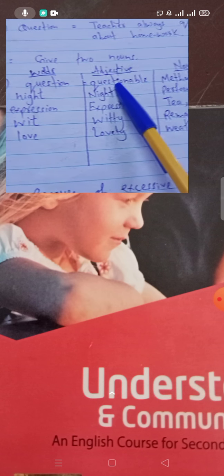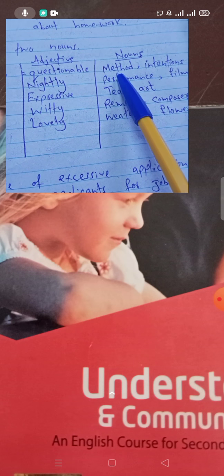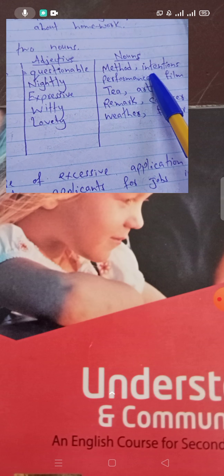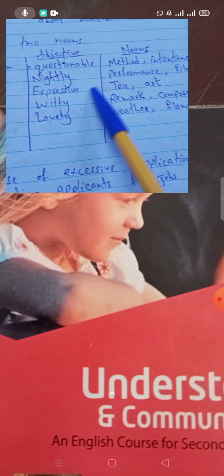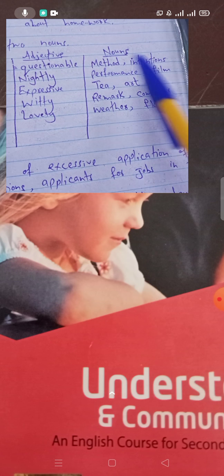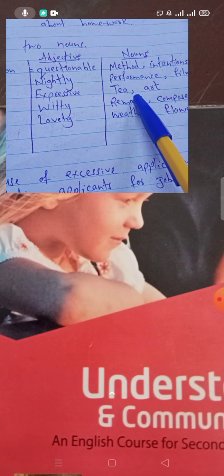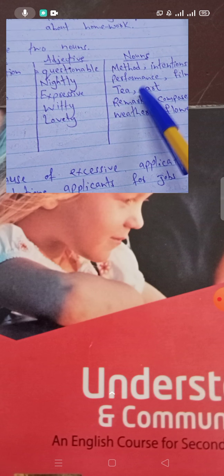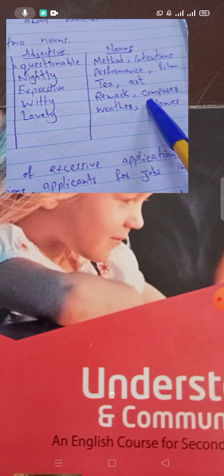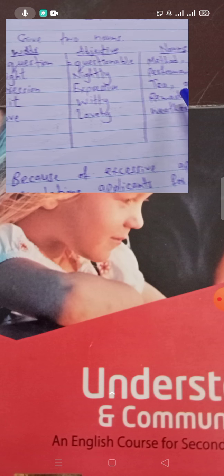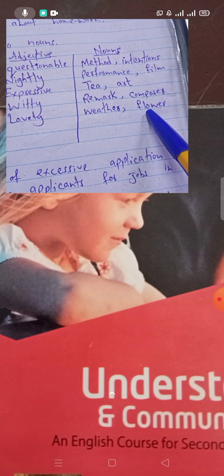'Question' — adjective is 'questionable'; nouns: 'questionable method' or 'questionable intentions'. 'Night' — adjective is 'nightly'; 'nightly performance', 'nightly film', 'nightly walk'. 'Expression' — adjective is 'expressive'; 'expressive art', 'expressive talent'. 'Wit' — adjective is 'witty'; 'witty remark', 'witty writer'. 'Love' — adjective is 'lovely'; 'lovely weather', 'lovely flower', 'lovely face'.